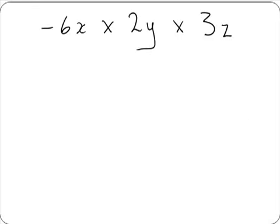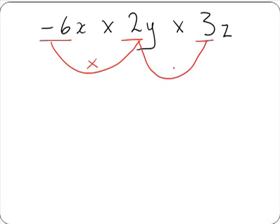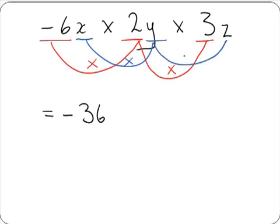Here we have minus 6x multiplied by 2y multiplied by 3z. Like before, we multiply our numbers: minus 6 multiplied by 2 gives us minus 12, and minus 12 multiplied by 3 gives us minus 36. Then we multiply our letters: x multiplied by y multiplied by z gives us xyz. So our answer is minus 36xyz.